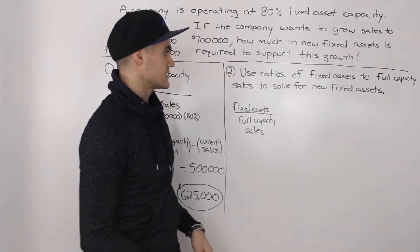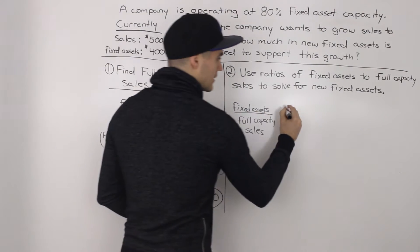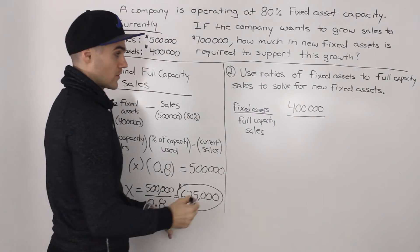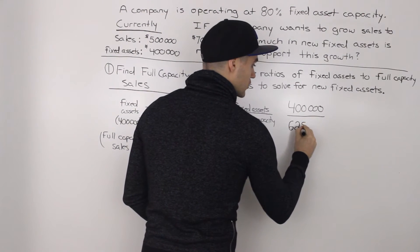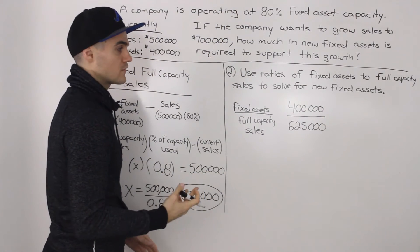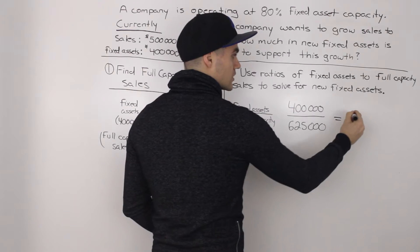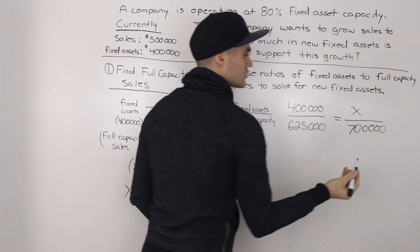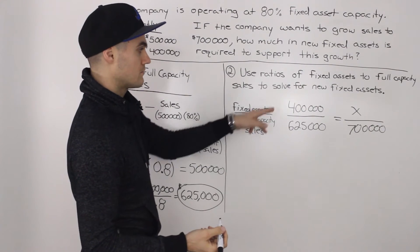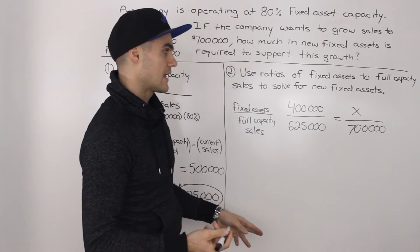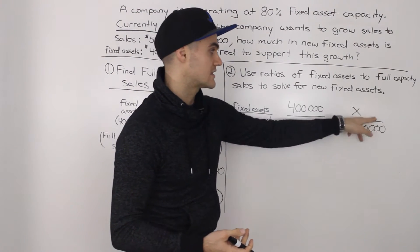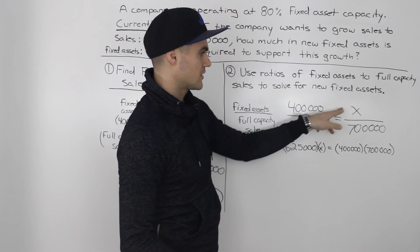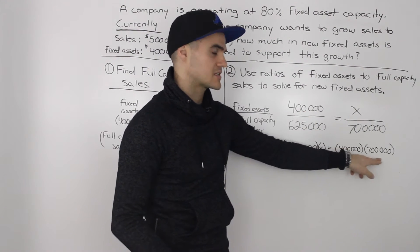Fixed assets to full capacity sales: our current fixed assets of $400,000 are capable of generating $625,000 worth of revenue — that's the full capacity sales for that $400,000 worth of fixed assets. How much in new fixed assets do we need to generate $700,000 worth of sales in revenue? These ratios have to be the same, so we cross multiply and solve for X, which represents the new fixed assets needed for $700,000 worth of sales. Cross multiplying: 625,000 times X equals 400,000 times 700,000.